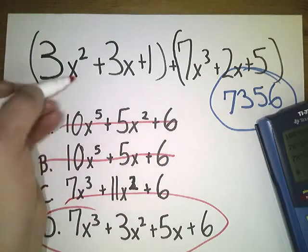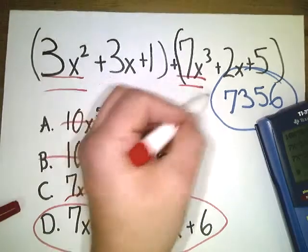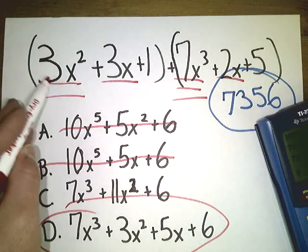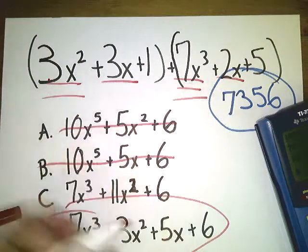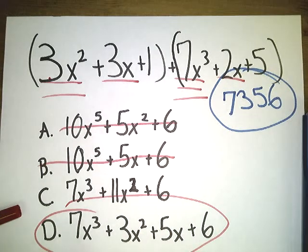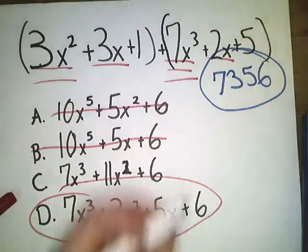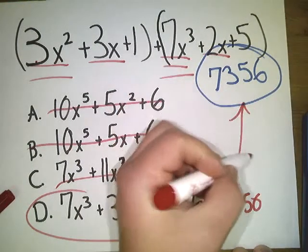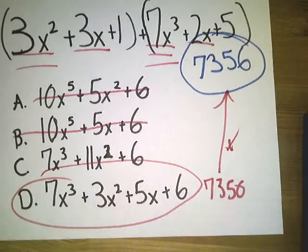To check, by the way, if you combine like terms up here, you'd have 7X to the 3rd power plus 3X squared. Combine these two, give you 5X, and then you get 6. So I'm just showing you that that works. This number, when I typed it out, was the same as this one. So that is a match. So that's my answer choice.